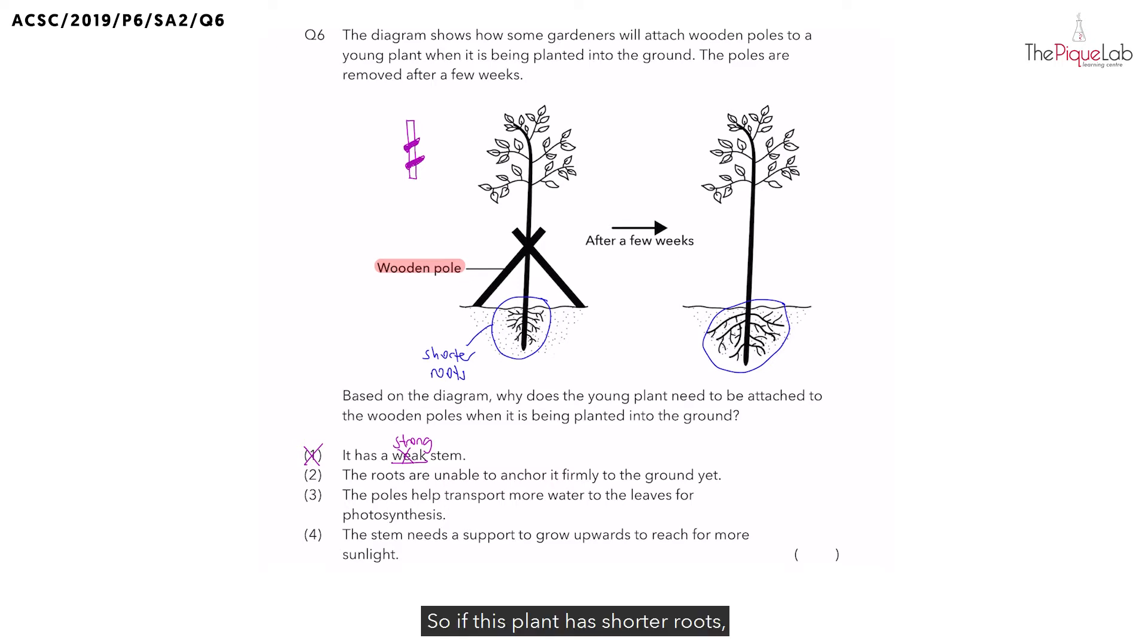If this plant has shorter roots, do you think the roots are able to anchor the plant firmly to the ground? The answer is no. With shorter roots, the roots cannot anchor the plant firmly to the ground. And that is why the plant needs the wooden poles so that it can be kept upright.